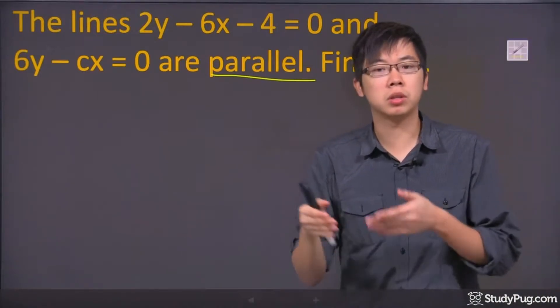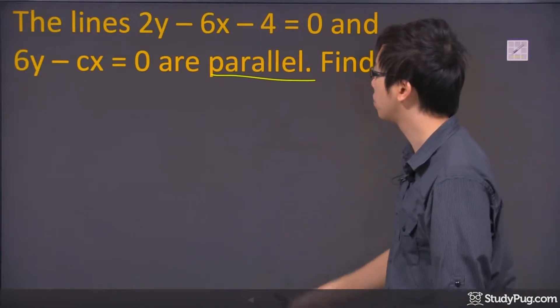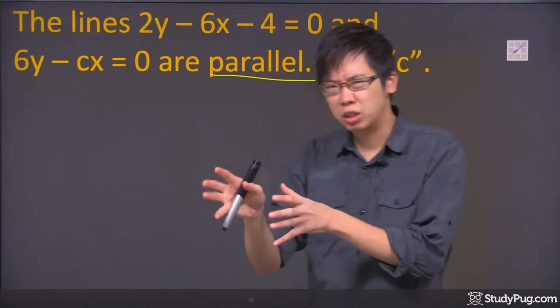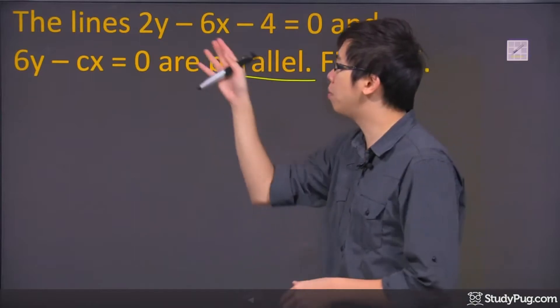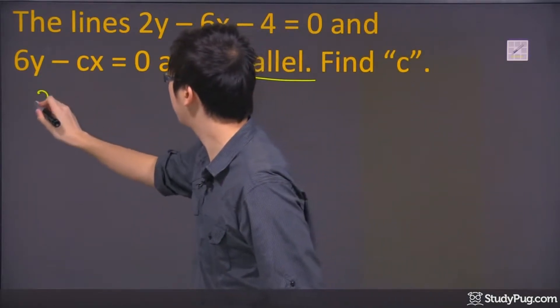Now, being parallel, that means the slope of the first line is equal to the slope of the second line. So in order to get the slope out directly, you might need to change that into y equals mx plus b form. So let's go ahead and do that.